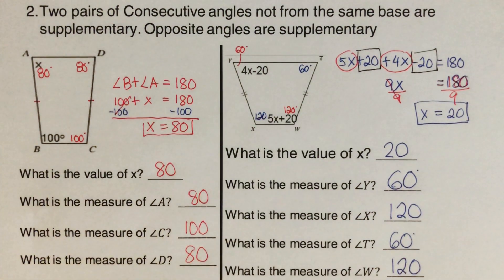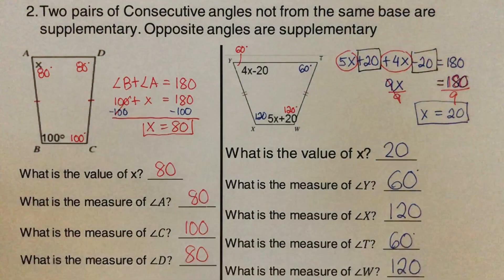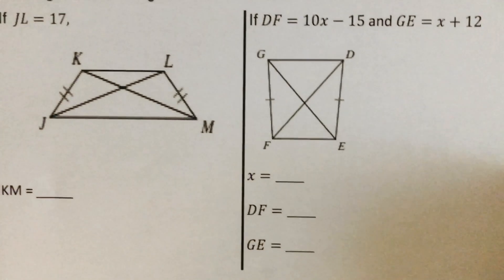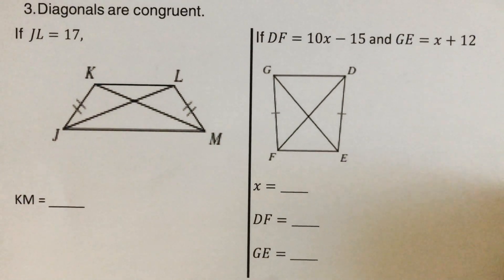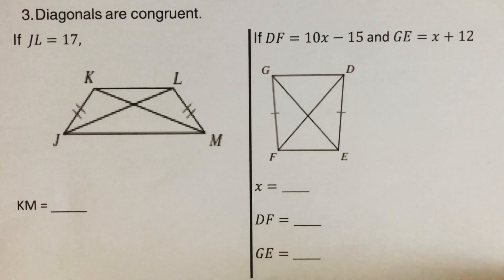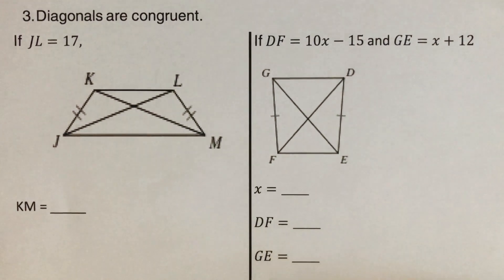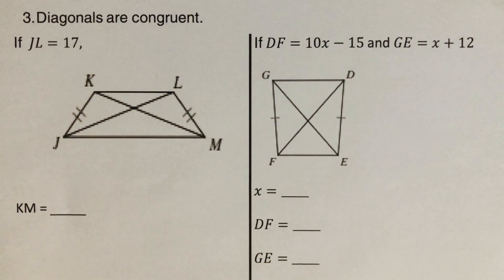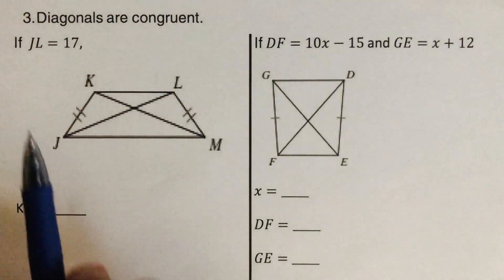Did you get the same answers? Good. Now let's move on to the third property, which talks about the diagonals of an isosceles trapezoid: the diagonals are congruent.